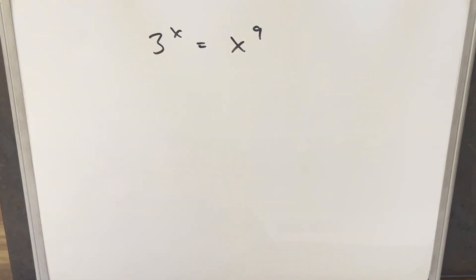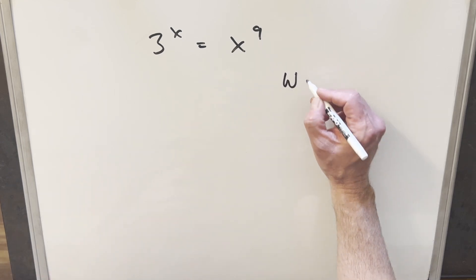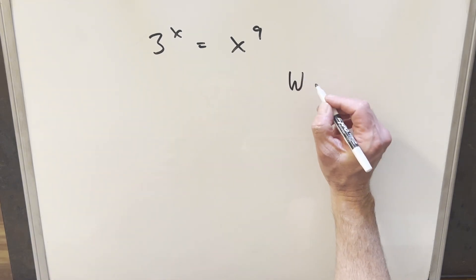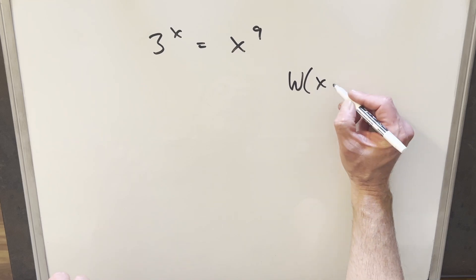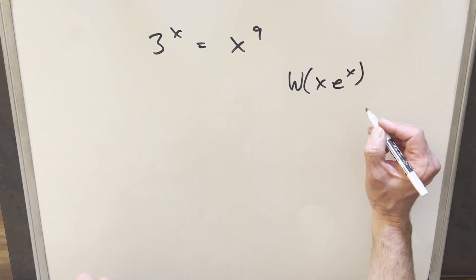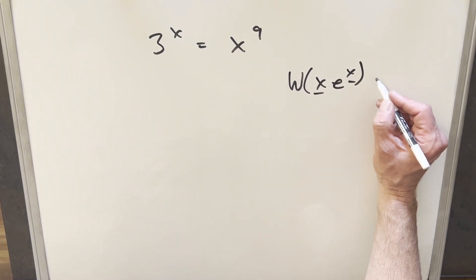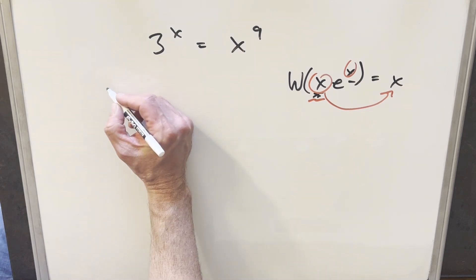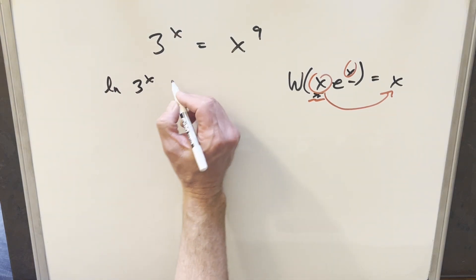For the Lambert W function, I'm not going to go into all the details — I'll provide a link to some of my previous videos on this. But I'm going to use the tool that if we have the Lambert W function of something in the form x·e^x, we just get back the input x. To get started, I want to take the natural log on both sides.